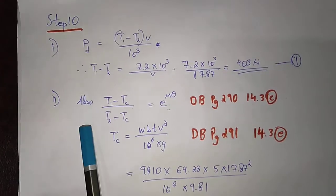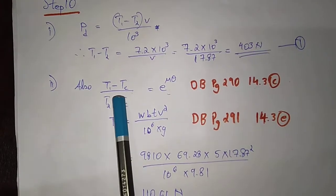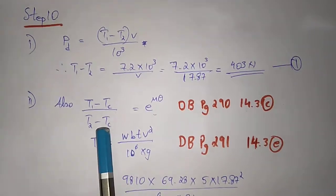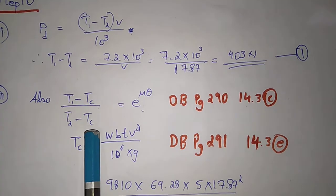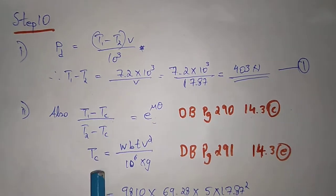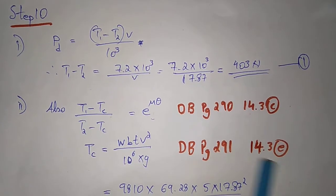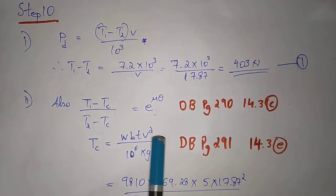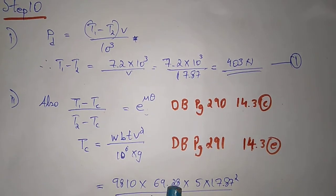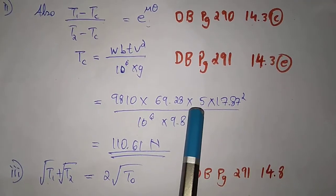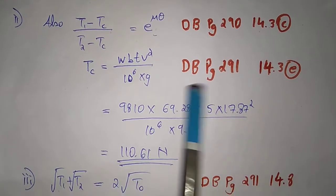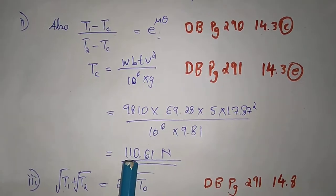For equation number 2 and equation number 3: (T1 minus Tc) divided by (T2 minus Tc) equals e raised to mu×theta — this accounts for centrifugal tension Tc. From data book page 14.3, Tc = w × b × t × v² divided by 10 power 6 into g = 1.0 × 69.28 × thickness × 5 × 17.87² divided by 10 power 6 × 9.81, giving Tc = 10.61 N.